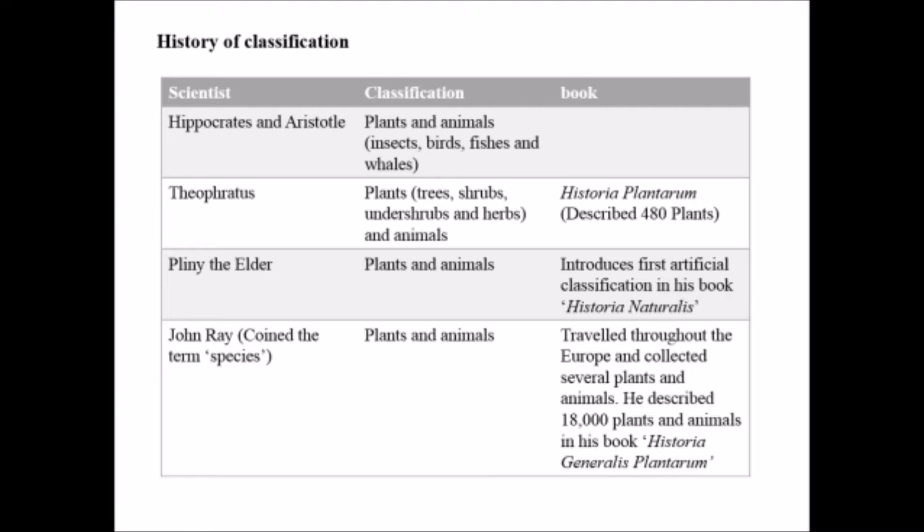He collected several plants and animals and described 18,000 plants and animals in his book Historia Generalis Plantarum. Throughout the history of taxonomy or science of classification of organisms, there was a period of Carolus Linnaeus.